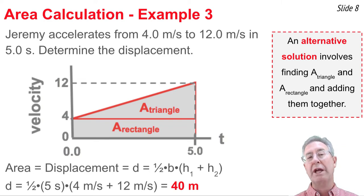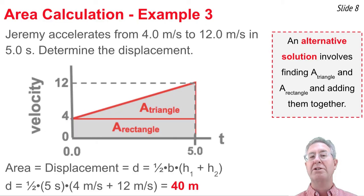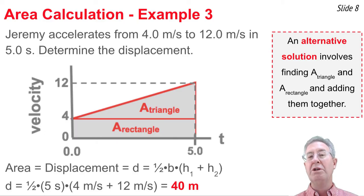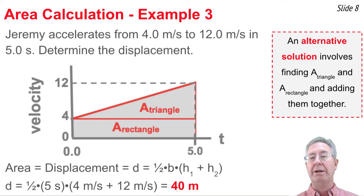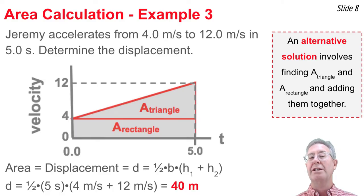An alternative method is to break the trapezoid into a rectangle and a triangle. The rectangle has a base of 5 seconds and height of 4 m/s, giving an area of 20 meters. For the triangle, the base is 5 seconds and the height is 8 meters (from 4 to 12 m/s — not 12, since it doesn't start at zero). So one-half times 5 times 8 equals 20 meters. Adding both areas gives 40 meters — the same as the trapezoid formula. The displacement is 40 meters.